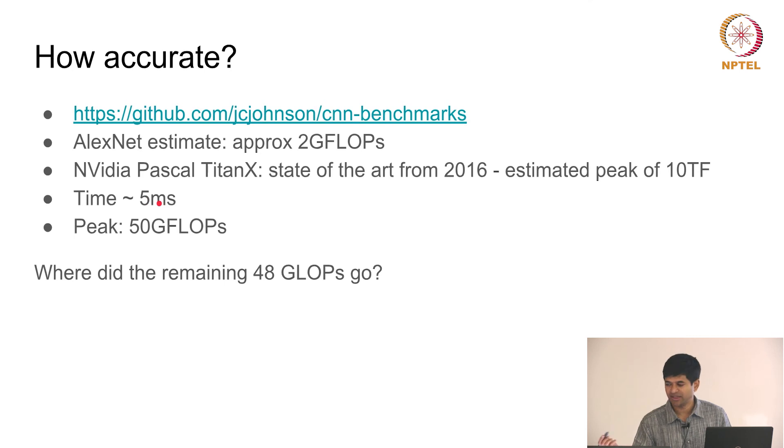Let us do the math: 10 teraflops peak into 5 milliseconds is 50 gigaflops, 50 billion floating point operations. Where did the remaining 48 go? Because what we are saying is one image on AlexNet should have taken us 2 gigaflops, the processor is capable of handling 10 teraflops, it took 5 milliseconds. Within 5 milliseconds the peak performance could have been 50 gigaflops, but we only recognized one image which is 2 billion floating point operations. What happened to the rest?